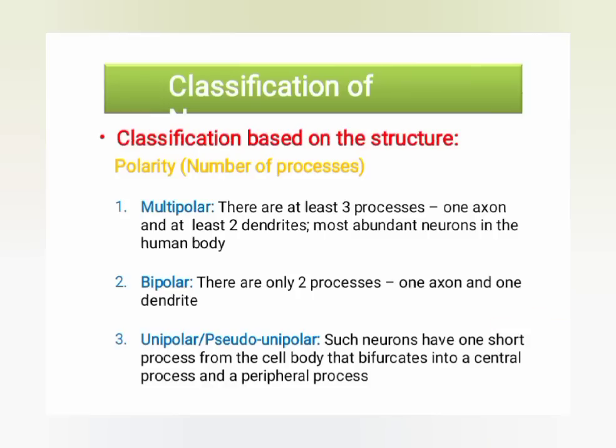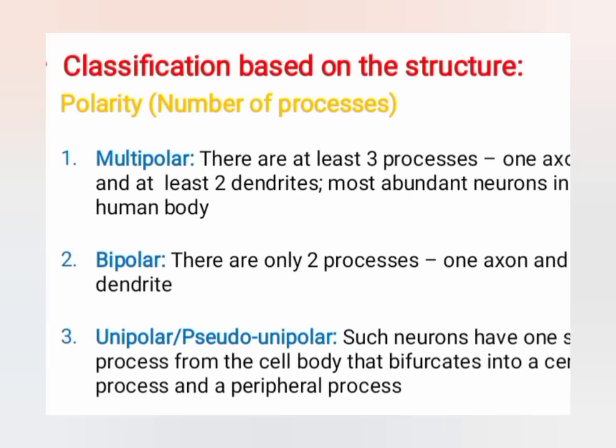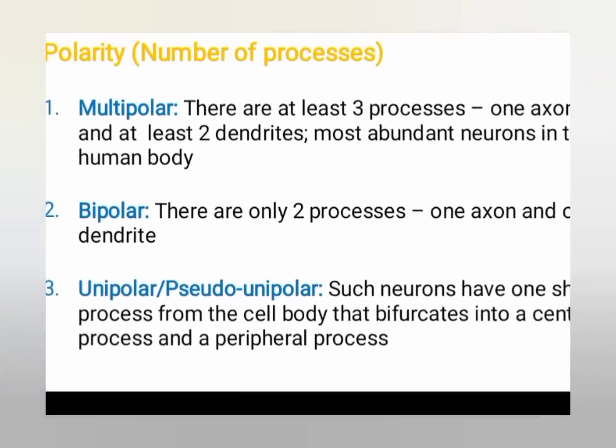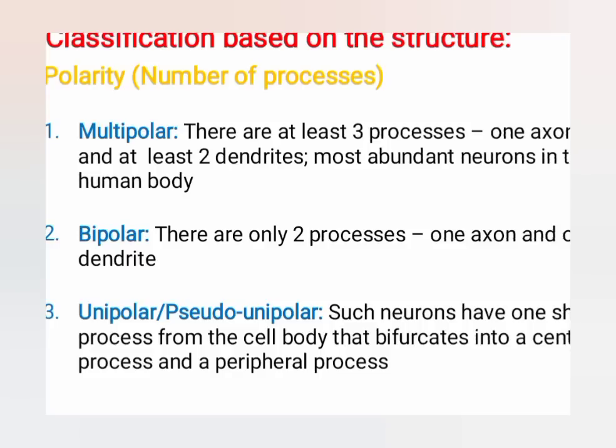Classification based on structure uses polarity — the number of processes. There are multipolar, bipolar, and unipolar types. Multipolar neurons have at least three processes: one axon and at least two dendrites, and are the most abundant structure in the human body. Bipolar neurons have only two processes: one axon and one dendrite.